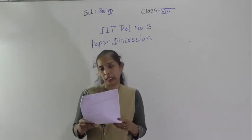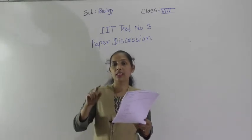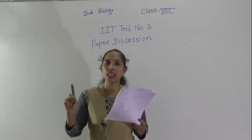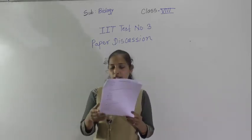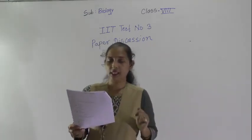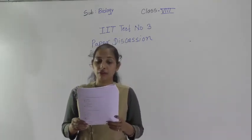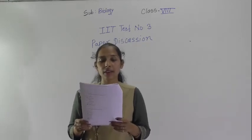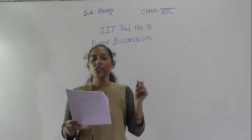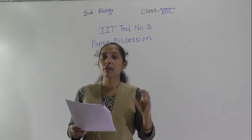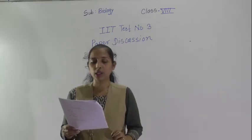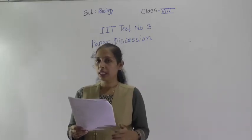Question number 10: chloroplast is found in plant cells. Chloroplast is one type of plastid, and plastids are found only in plant cells. So the correct option is plant cell. Question number 11: a cell with a definite nucleus and nuclear membrane is called a eukaryotic cell — the cell which has a well-developed, well-organized nucleus and also has a nuclear membrane.